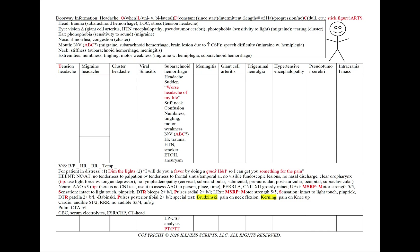In a subarachnoid hemorrhage, we'll have a headache that's sudden. Classically, it's the worst headache of my life. We'll see a stiff neck, confusion, neural findings of numbness, tingling, or motor weakness. We'll also have nausea and in particular vomiting, using A, B, and C. And a history of trauma or hypertension, smoking, alcohol, or aneurysms. We'll add an LP with CSF analysis, and a PT and PTT, as we do for any case that involves blood or bleeding.